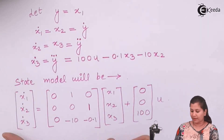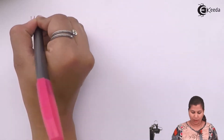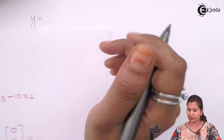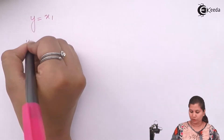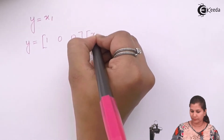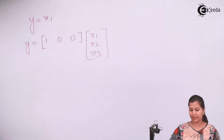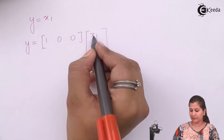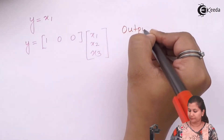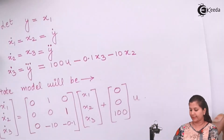This is our state equation. For the output equation: Y equals our first state variable X1. So the output equation gives the row [1, 0, 0], meaning only X1 has coefficient 1 and the rest are 0. This is our output equation, Y = X1.